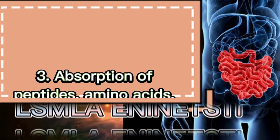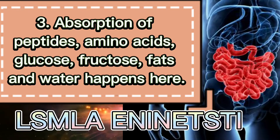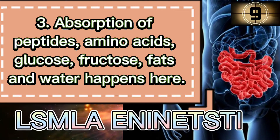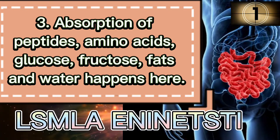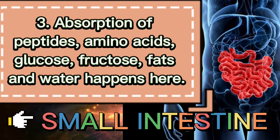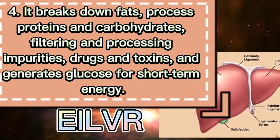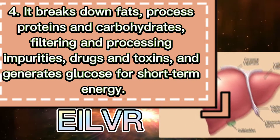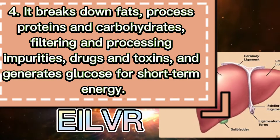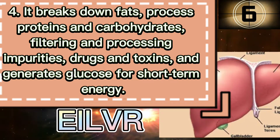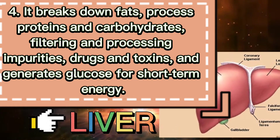Number 2. It is the beginning of digestion. The correct answer is: Mouth. Number 3. Absorption of peptides, amino acids, glucose, fructose, fats and water. What happens here? The correct answer is: Small intestine. Number 4. It breaks down fats, processes proteins and carbohydrates, filtering and processing impurities, drugs and toxins, and generates glucose for short-term energy. The correct answer is: Liver.